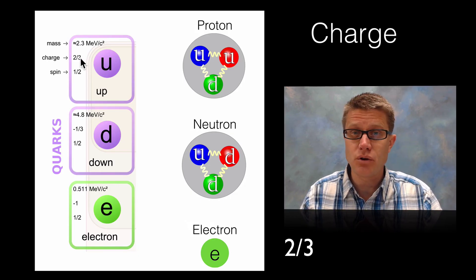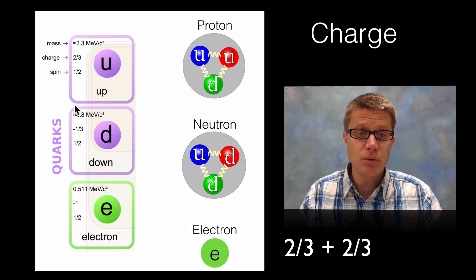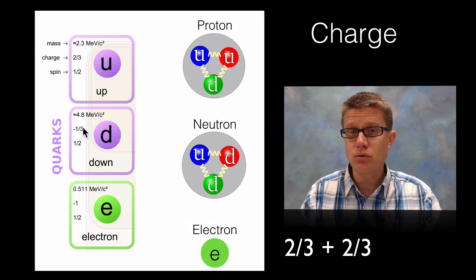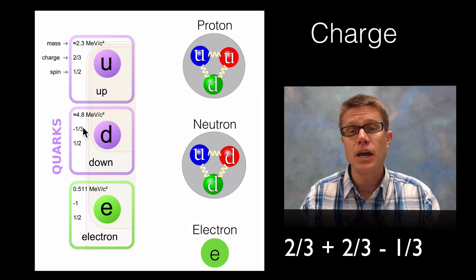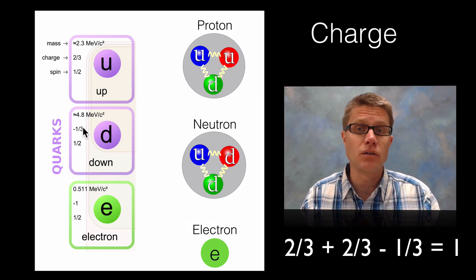So that is 2/3 plus 2/3 or 4/3. And then we have to subtract the 1/3 of the down quark. And so if we subtract 1/3 from 4/3 we get 3/3 or a positive 1 charge of a proton.